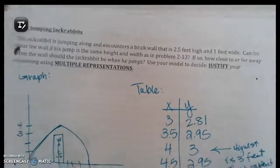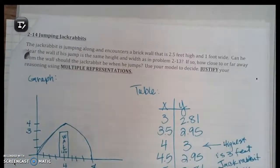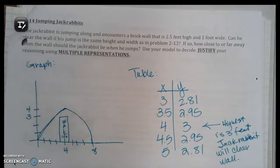At the top of page 12 we have another jumping rabbit. It says the jackrabbit is jumping along and encounters a brick wall that is two and a half feet high and one foot wide.